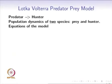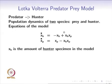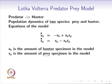This model studies how the population of two species varies as a function of time. These two species are classified into prey and hunter. Let xh be the hunter specimen and xp be the prey specimen. The model equations are: x_dot_h equals minus xh plus xh times xp, and x_dot_p equals xp minus xh times xp.